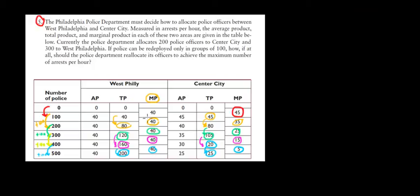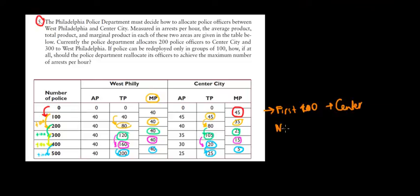As a conclusion: the first hundred police officers should go to Center City because they're most productive there — probably more crowded, so it's wiser to put them there first. But the other 400 officers should go to West Philly. Hope this makes sense, and we are done.